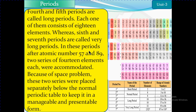The sixth and seventh periods are called very long periods. Focus on the asterisk symbols (stars) in the periodic table — what do they mean? In these periods, after atomic numbers 57 and 89, two series of 14 elements each were accommodated. Because of space problems, these two series were placed separately below the normal periodic table to keep it manageable and representable.